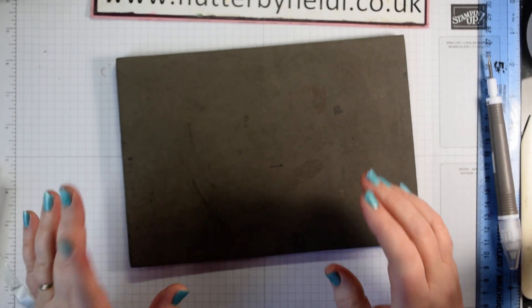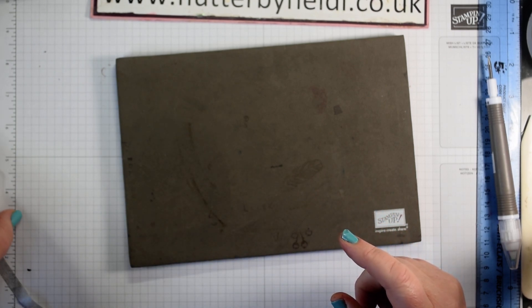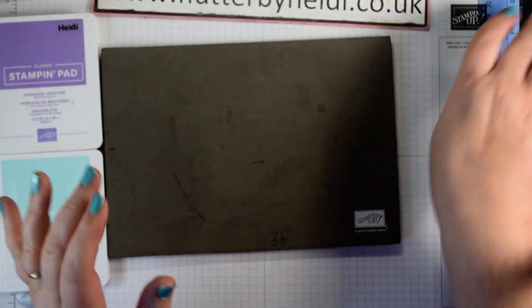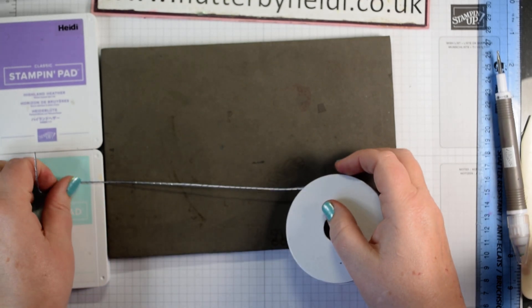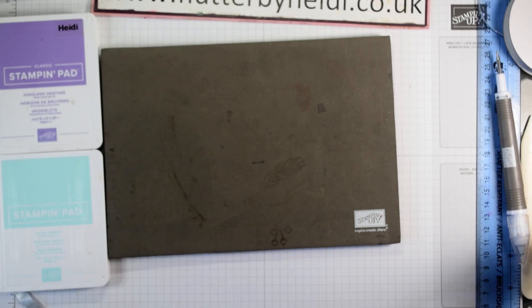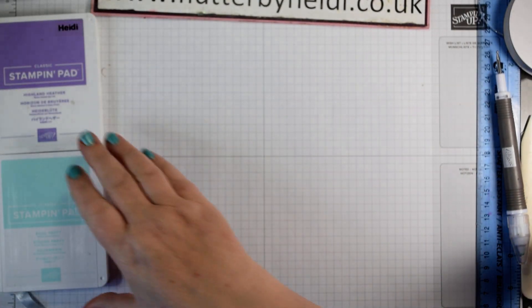So having done it in Misty Moonlight and Balmy Blue, I'm actually going to use one of my favourite combinations, which is the Highland Heather and Pool Party, because I want to show you how you can adapt this ribbon so that it will still go with that. And you're going to want your Stampin' Pierce mat because it's a photopolymer stamp set.